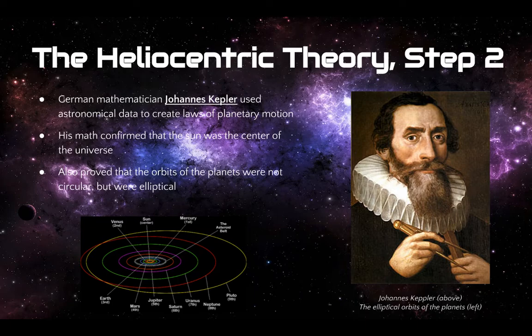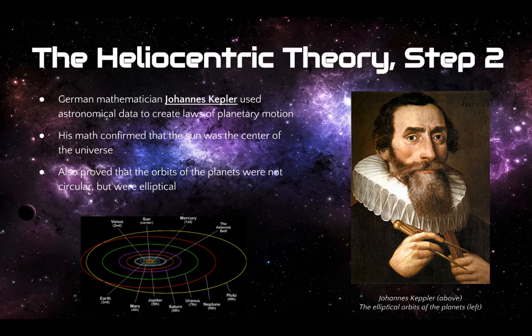So this brings us to kind of step two with the heliocentric theory. Copernicus had basically determined that the Sun, not the Earth, was the center of the universe. And a German mathematician sought to kind of do a little bit more with this model. And so he used astronomical data and being a mathematician, he created laws of planetary motion, or more accurately discovered some laws of planetary motion. Basically, he used math to confirm that the Sun was the center of the universe. And also, he discovered that the orbits of the planets weren't perfectly circular, like the geocentric theory thought, or like Copernicus thought. But they were actually elliptical, which you can see in the image at the bottom there. So there you go. That's Johann Kepler.